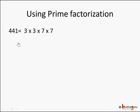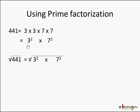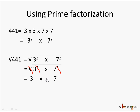We can represent these as squares: 3 into 3 is 3 squared, and 7 into 7 is 7 squared. So 441 equals 3 squared into 7 squared. Now the square root of 441 equals the square root of 3 squared into 7 squared. Both numbers inside the square root have squares, so we cancel the squares with the square root sign and we are left with 3 into 7. So the square root of 441 is 3 into 7, which is 21.